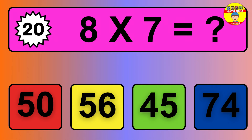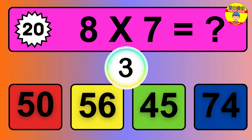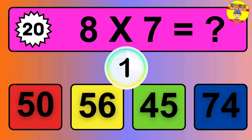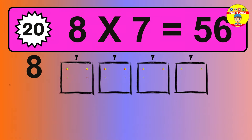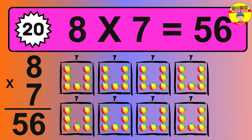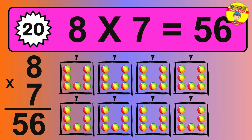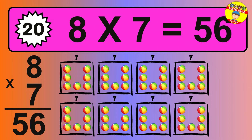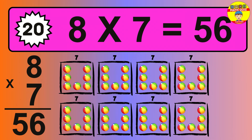Question 20. 8 times 7 equals what? The answer is 8 times 7 is 56. To calculate, we have 8 groups with 7 balls each one. So how many balls do we have? 56 balls.